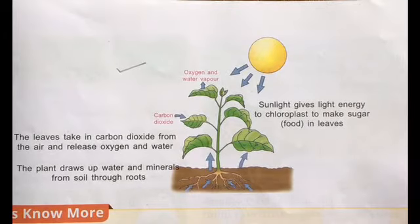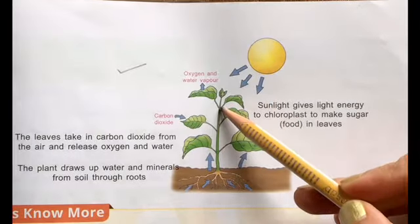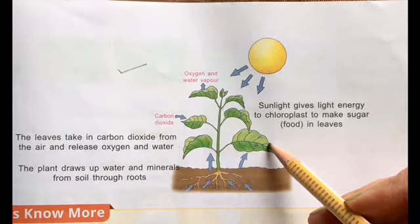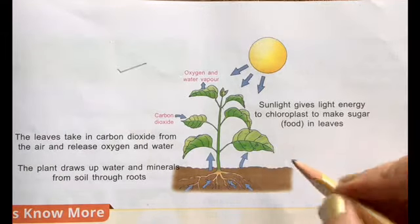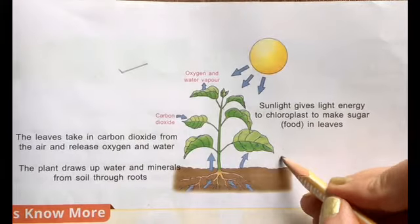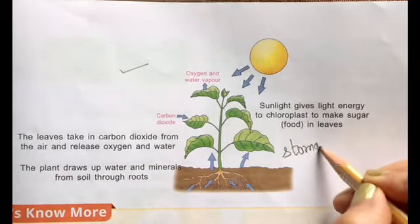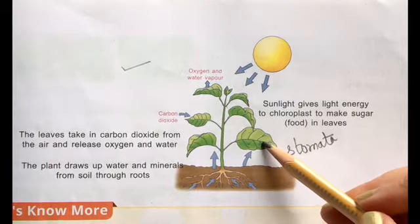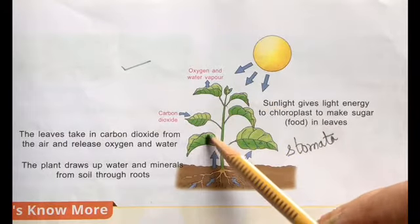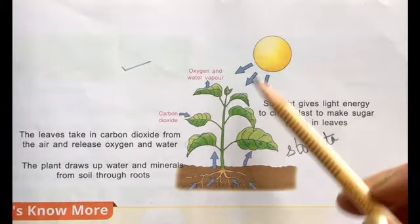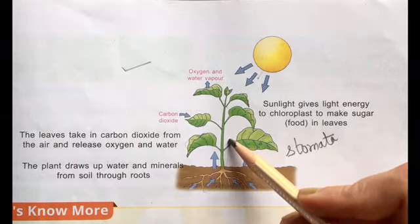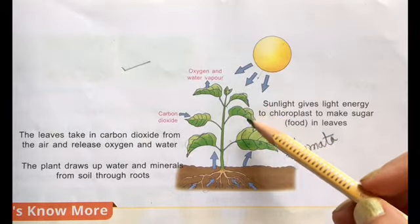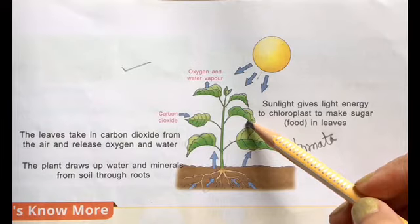Now let us discuss the process of photosynthesis. You can see this is a plant. In the leaves there are small holes called stomata. Through these stomata, carbon dioxide from the atmosphere is absorbed. The green leaves have chlorophyll, and with the help of sunlight, water from the soil, carbon dioxide, and chlorophyll, they make their food.